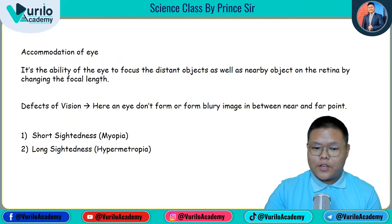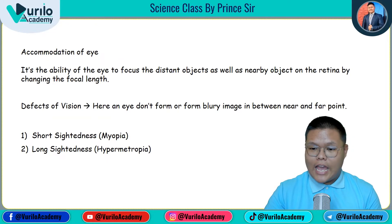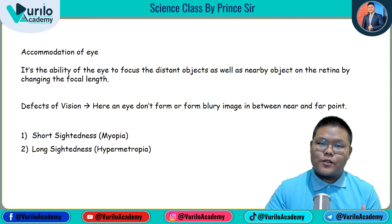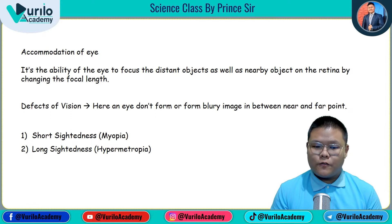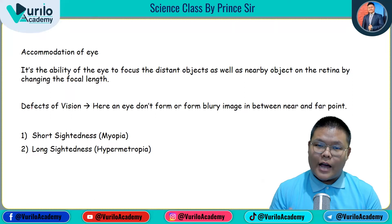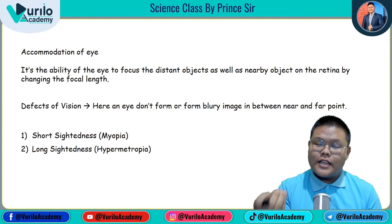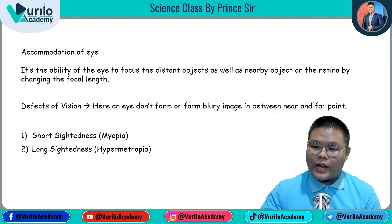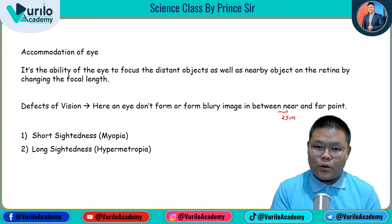At class 10 level, accommodation of the eye means how our eye can focus at different distances. The eye adjusts by increasing or decreasing focal length. The near point is generally 25 centimeters, and the far point is at infinity. If the eye cannot accommodate properly for near or far distances, defects of vision occur.